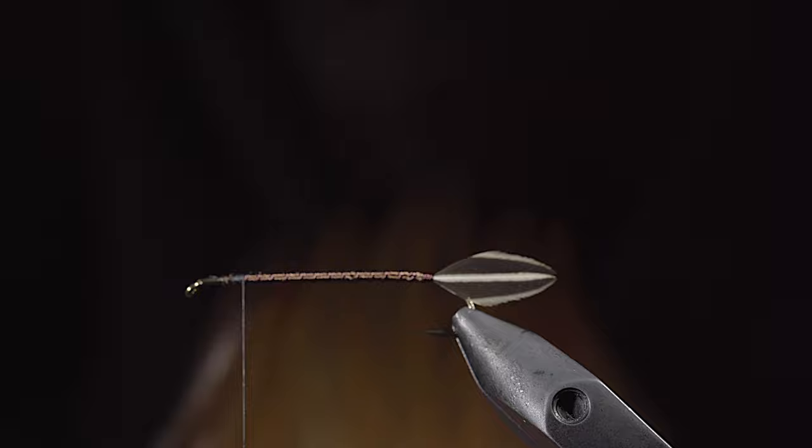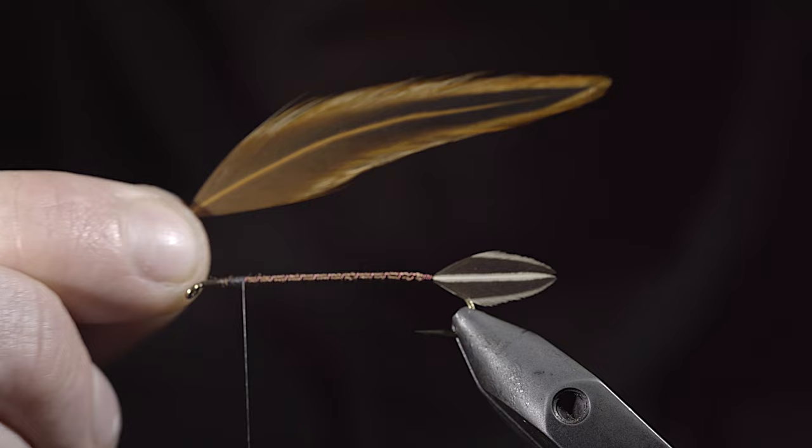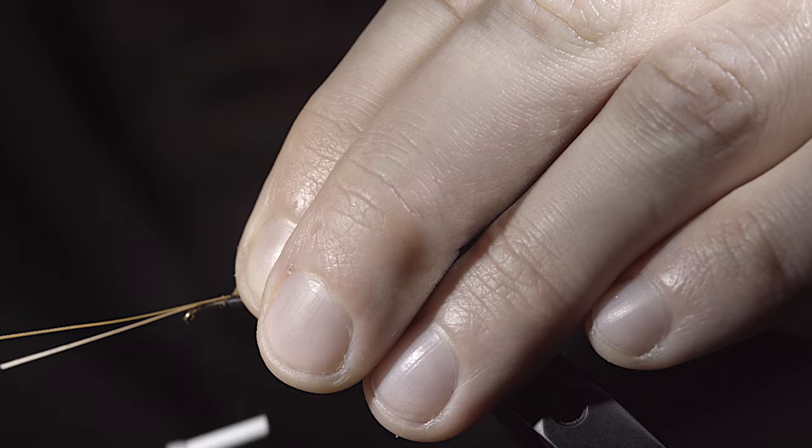We'll then grab a hen cape in a green well-like pattern and select two feathers with prominent black bands. Strip away the excess and secure them carefully to the head of your fly. Once complete, snip the excess free.